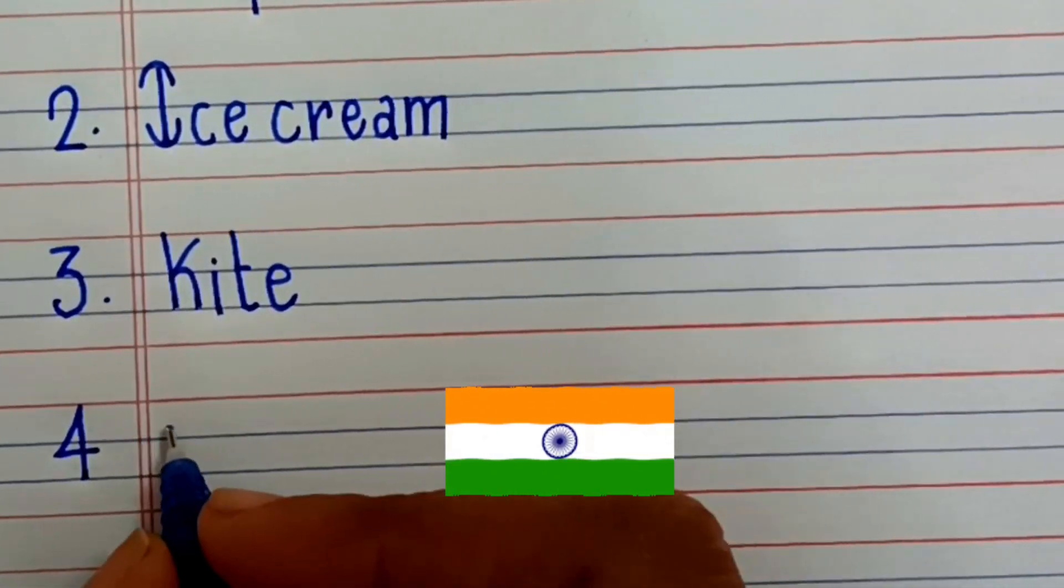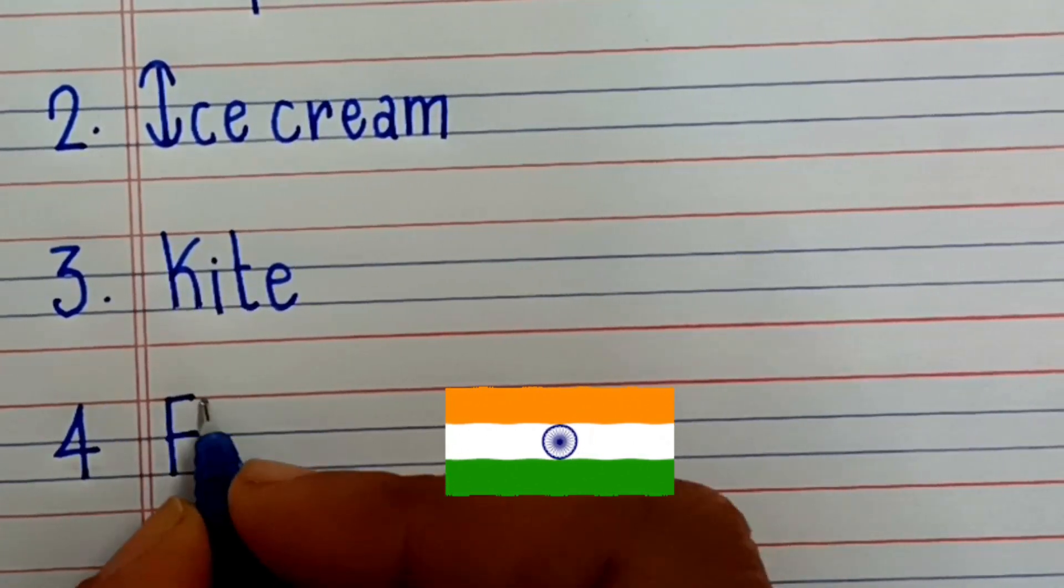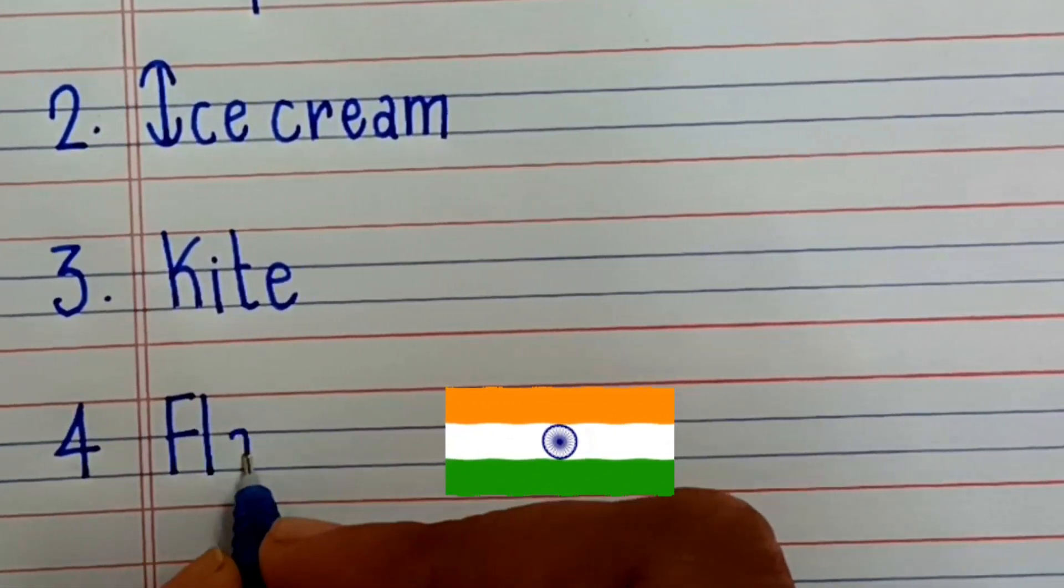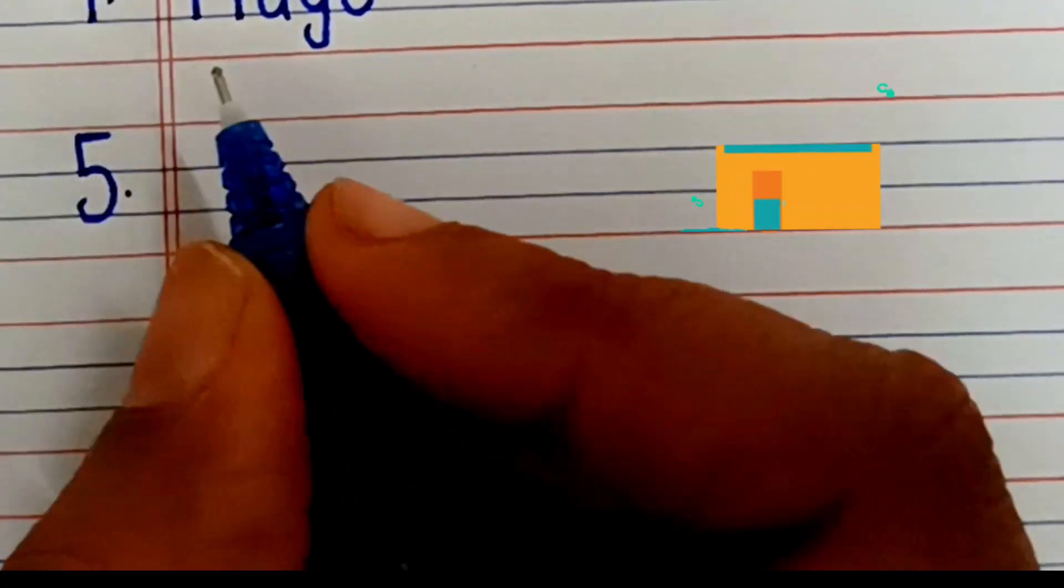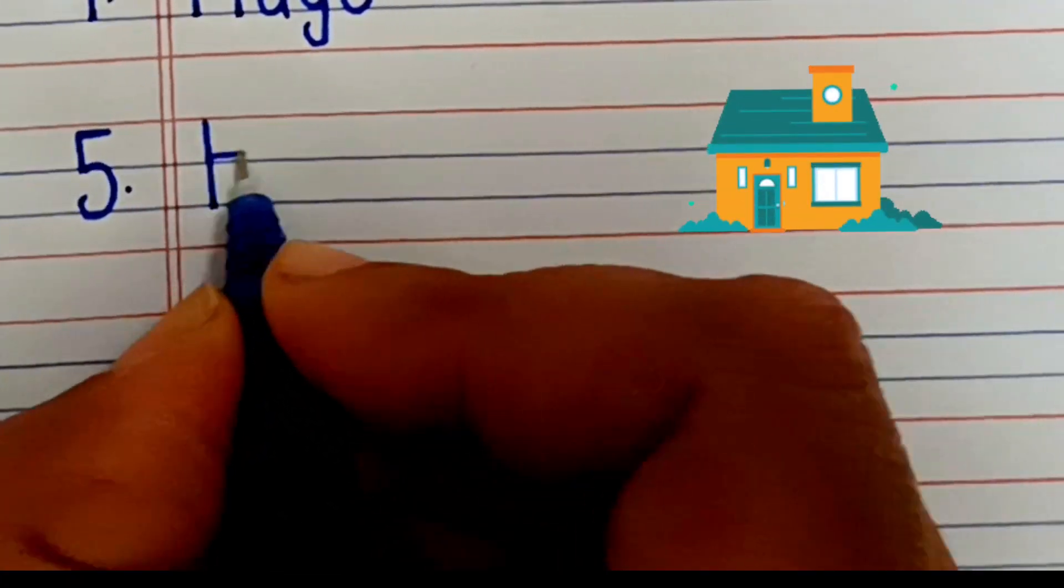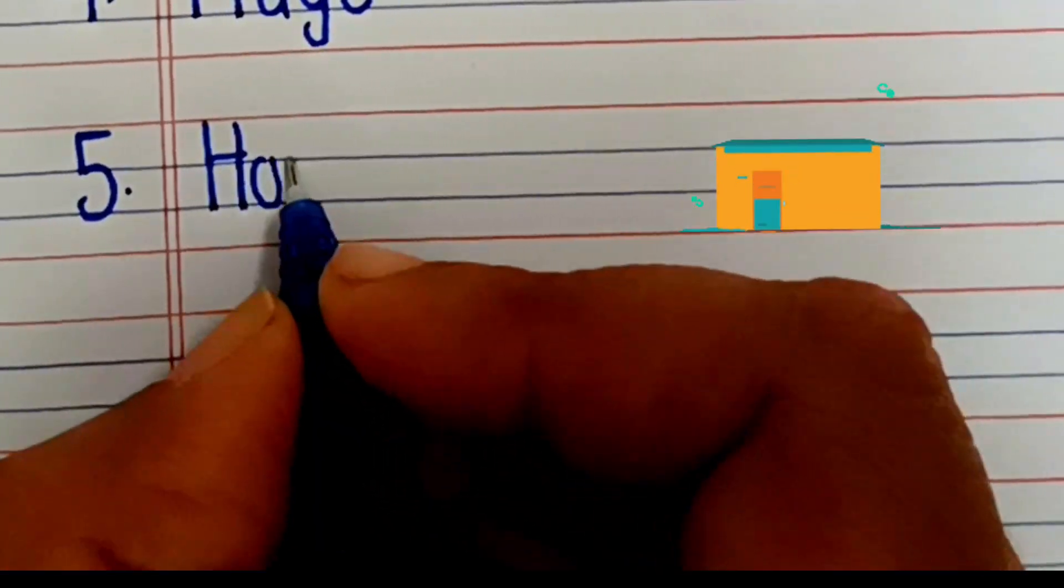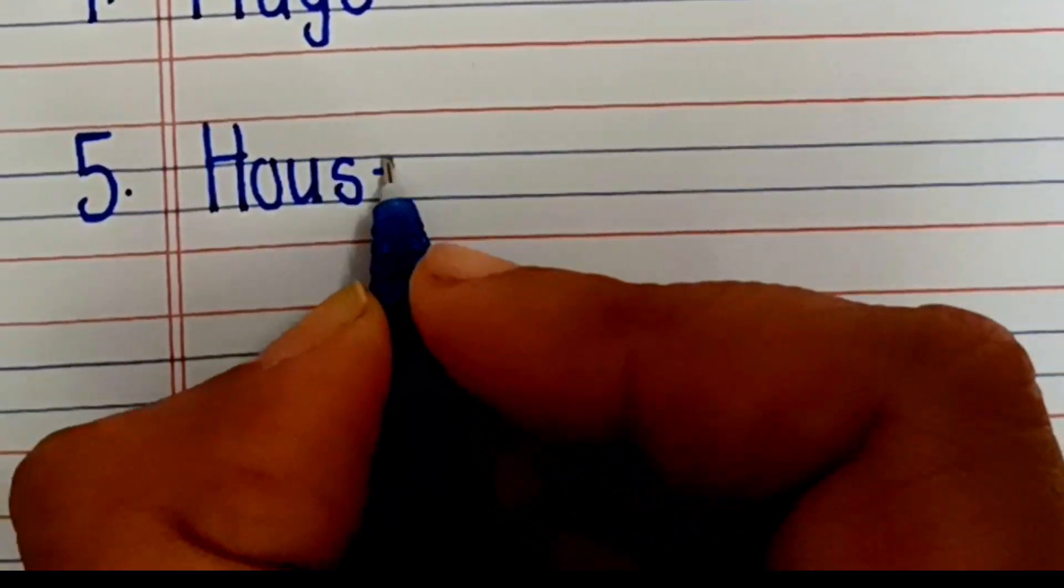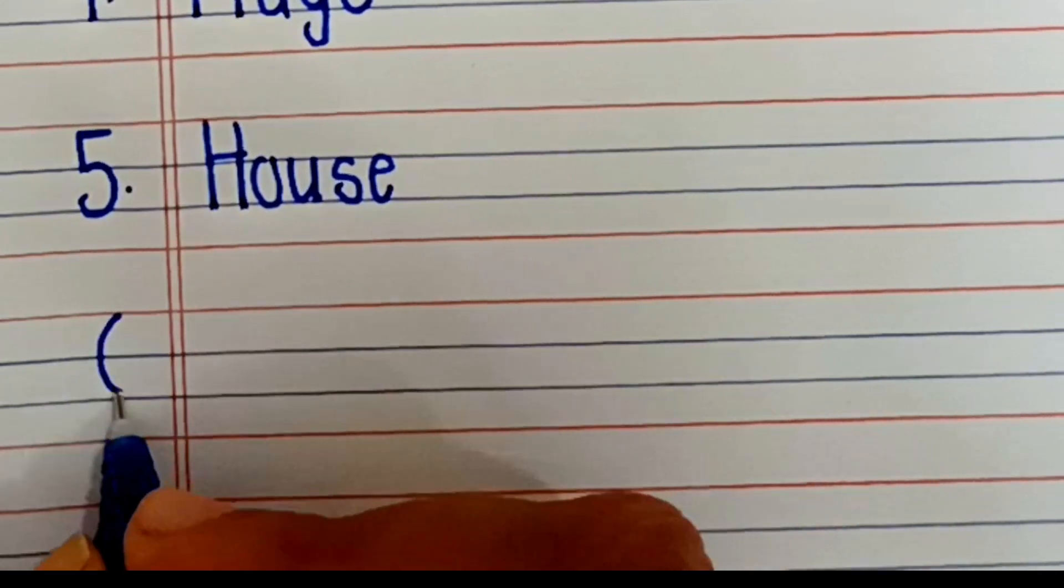Fourth non-living thing is flag. F-L-A-G, flag. Fifth non-living thing is house. H-O-U-S-E, house.